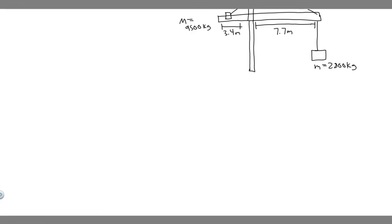In this problem, we're told a tower crane must always be carefully balanced so that there is no net torque tending to tip it. A particular crane at a building site is about to lift a 2,800 kg air conditioning unit. The crane's dimensions are shown in the figure. Part A asks where the crane's 9,500 kg counterweight must be placed when the load is lifted from the ground. Part B asks for the maximum load that can be lifted with the counterweight at its full extent. Ignore the mass of the beam.